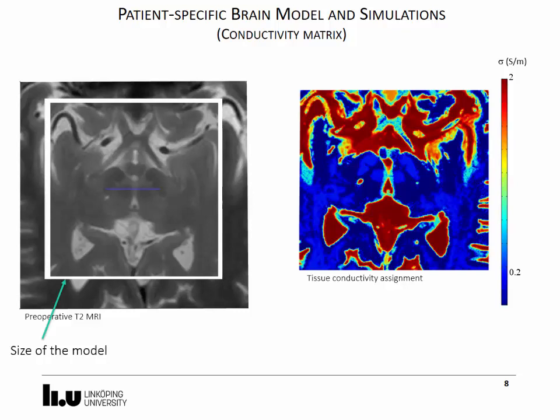The result of the classification derives in a conductivity matrix shown in the figure to the right. Here, the image color goes from the lowest electrical conductivity around 0.07 corresponding to the white matter to the highest value around 2 siemens per meter corresponding to the cerebrospinal fluid.